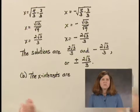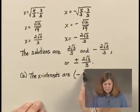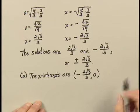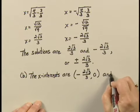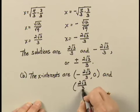I'm going to start with the first one that we come to on the number line, which is the negative number: (-2√3/3, 0) and (2√3/3, 0).